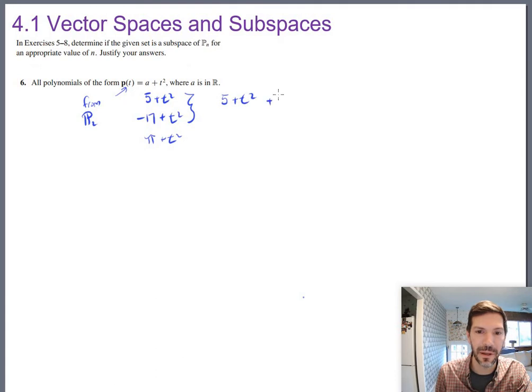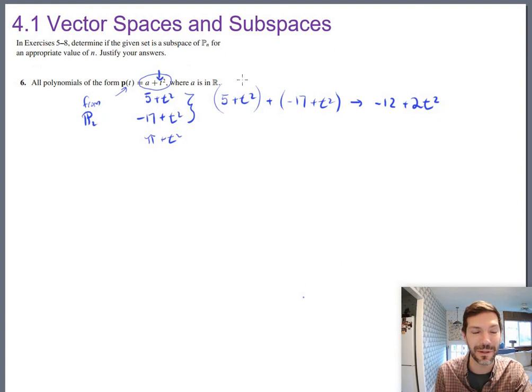5 plus t squared plus negative 17 plus t squared. Do you get something of this form? Let's find out. So collect like terms, five negative 17, be negative 12, t squared plus t squared is two t squared. And that's not this form, right? This form did not allow for another constant there in front of t squared. It was just plain t squared. And when you add two of those together, you don't get another one of them. So already broken.